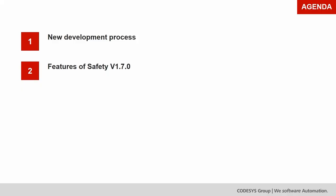Now I want to tell you about CodeSys Safety and the next version, 1.7.0, planned for release at the end of this year. There are two agenda points: a new development process for safety, and the features planned for release with that new version.